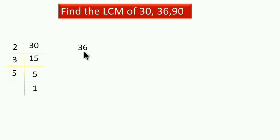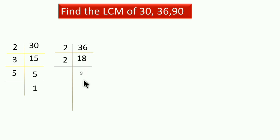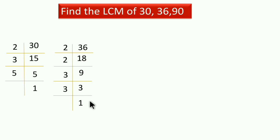Next number है 36। 36 को 2 से divide करेंगे - answer 18। 18 को भी 2 से divide करेंगे - answer 9। अब 9 को 2 से divide नहीं होता, इसलिए 3 से करेंगे। 3×3=9, और 3÷3=1। जब तक end में 1 नहीं आता, तब तक divide करना है।